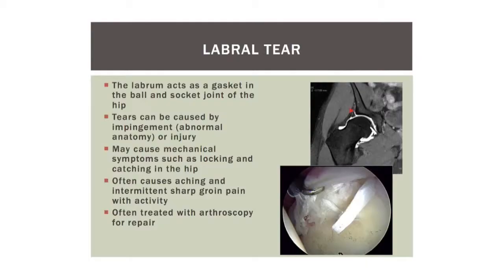Dovetailing into that are labral tears. The labrum in the hip is a gasket around the ball and socket joint. You can get a tear of the labrum from extremes of motion, from trauma, or from impingement — it often goes along with a ball-and-socket mismatch. This picture shows a pretty big labral tear seen at arthroscopy. These often cause mechanical symptoms and pain deep in the groin, including locking, catching, intermittent aching, and groin pain with activity. This is often treated with repair if therapy and activity modification don't work.